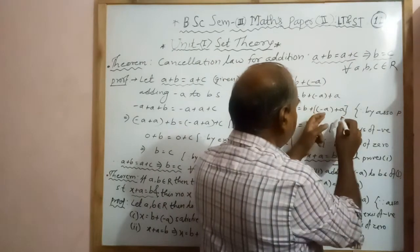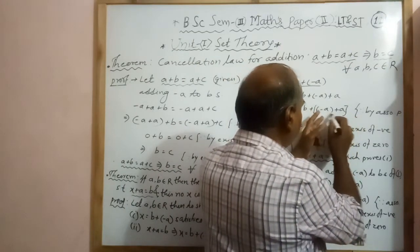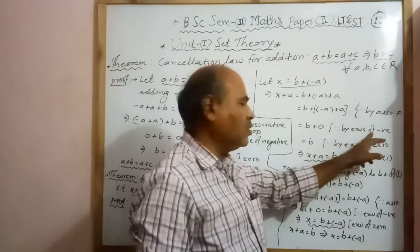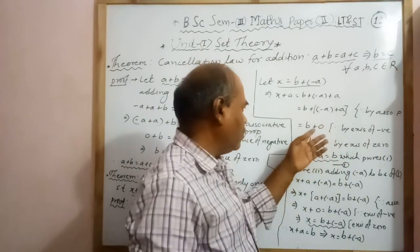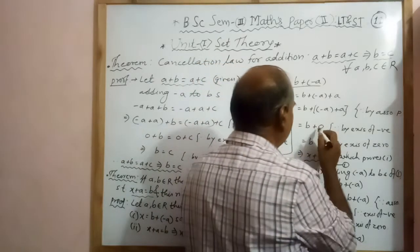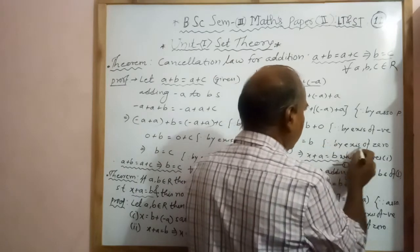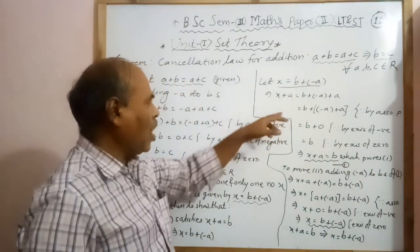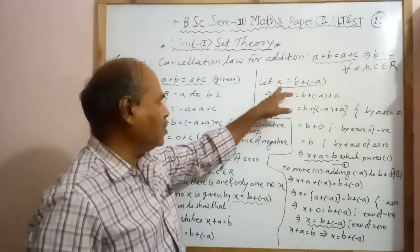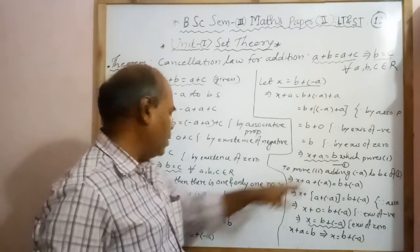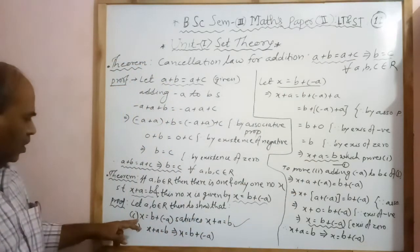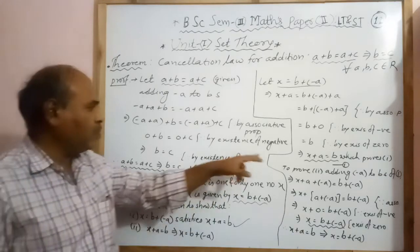By the addition of the negative, since minus a is the negative of a, their addition gives 0. Therefore we get b plus 0, by the existence of the negative. Then, adding 0 to any number gives the same number, by existence of zero, so b plus 0 equals b. Therefore x plus a equals b. We took x equals b plus minus a and derived x plus a equals b. This proves the first part.